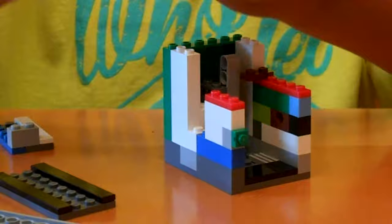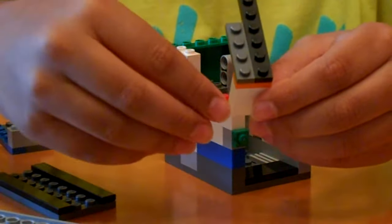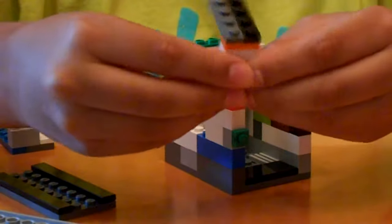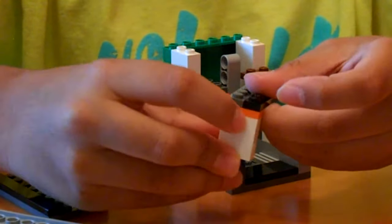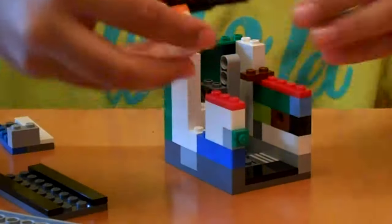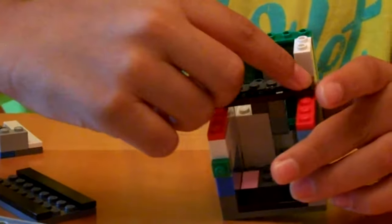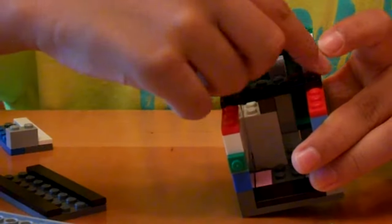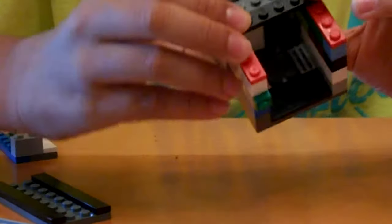Then you want to take a 2x1 that's 2 blocks tall, and then a 2x1 flat here, the orange one. And you're going to place that on top. And then this part, you want to add a 1x6 on top, and then a 1x4 here to create like an enclosure.